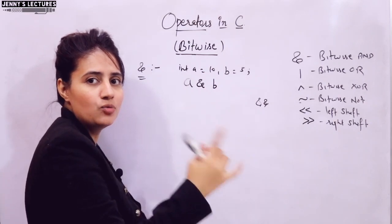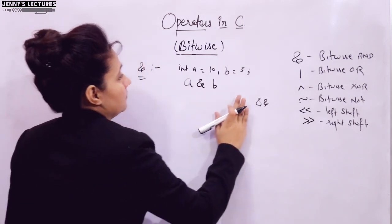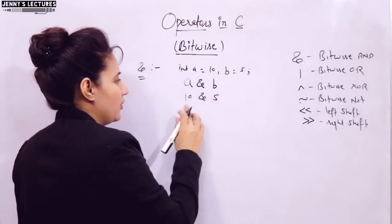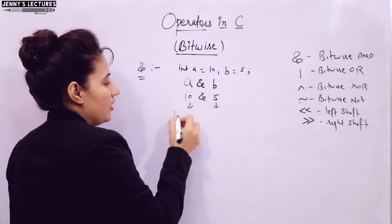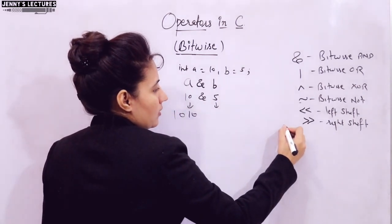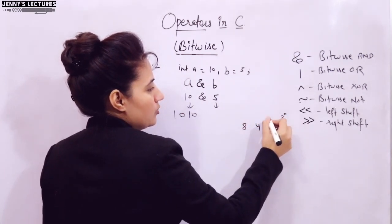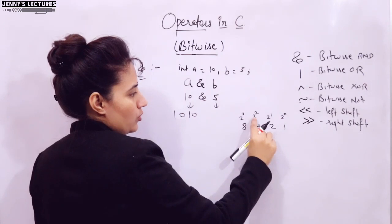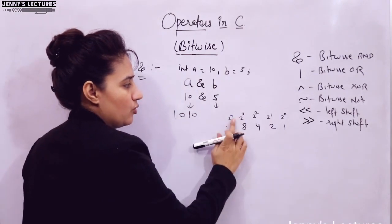A prerequisite is knowing how to convert decimal to binary and binary to decimal. The binary value of 10 is 1010. I am using 4-bit representation where the place values are 2^0=1, 2^1=2, 2^2=4, 2^3=8. In 4-bit representation the minimum is 0000 and the maximum is 1111, which equals 15 in decimal. For numbers greater than 15, you can extend to more bits.